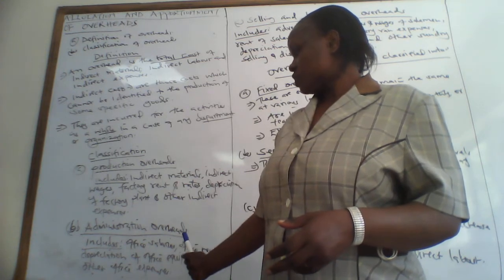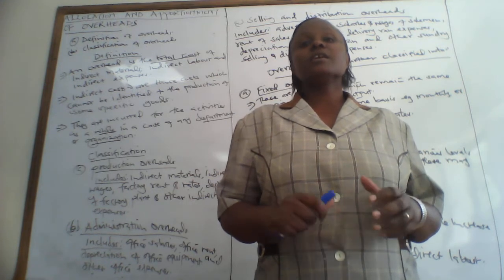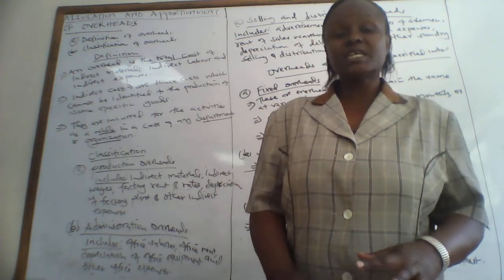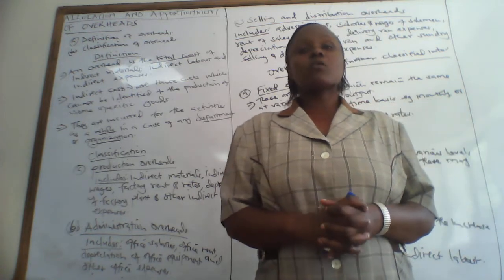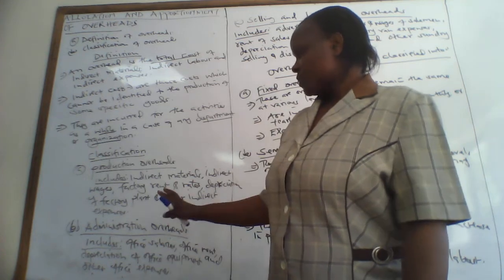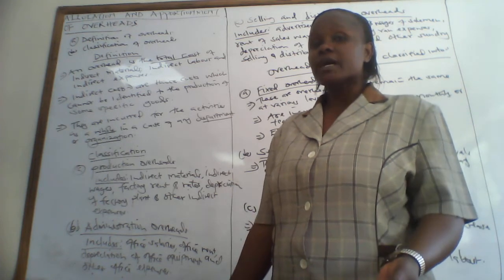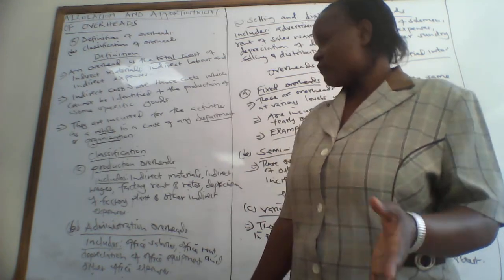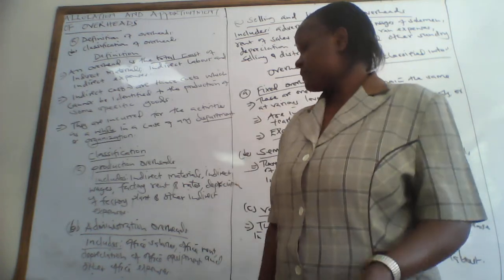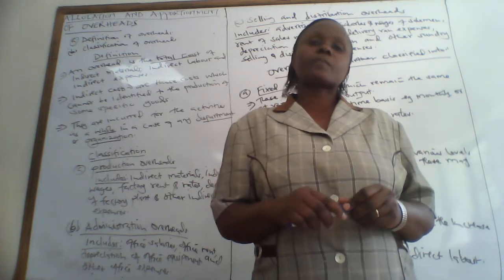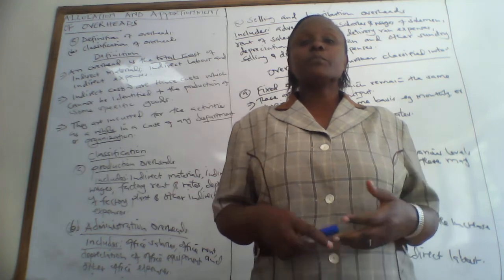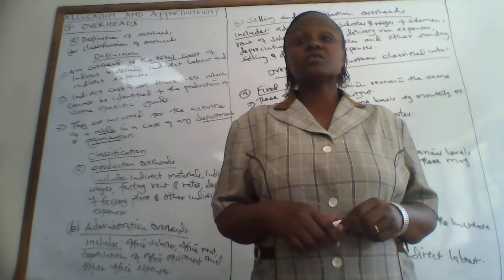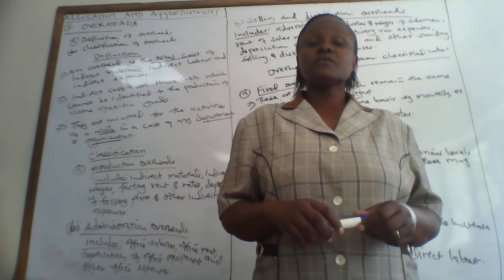Then we have administration overheads. These are the expenses which are incurred in the office while administering the activities of an organization. They include office salaries and wages, office rent, depreciation of office equipment or machinery, and any other office expenses like stationery, printing, postage, travelling, and transport.